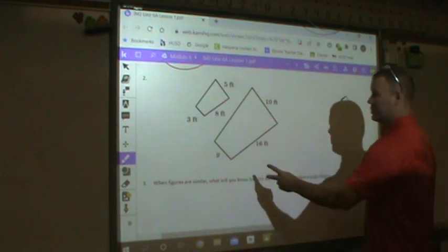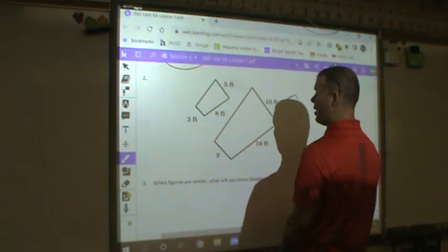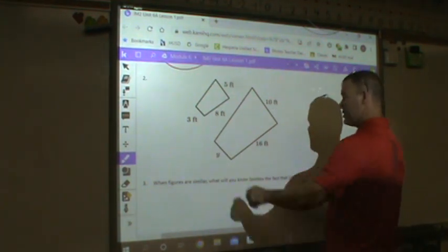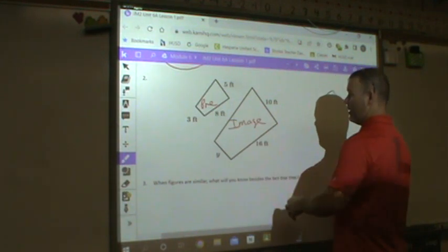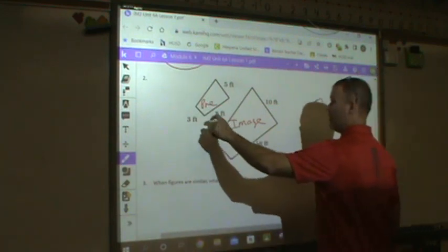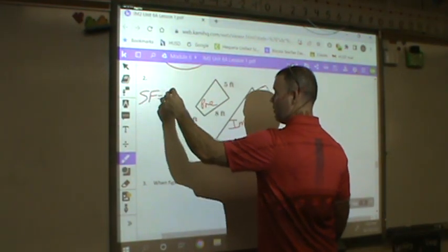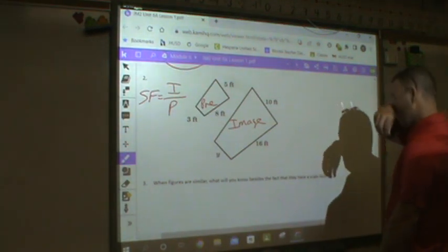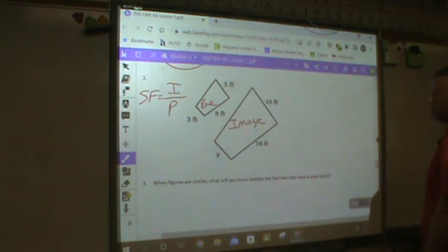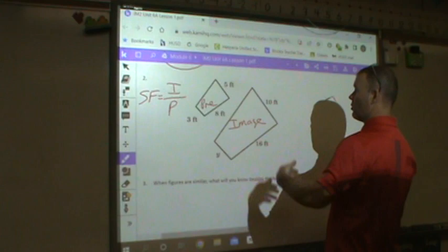Go down to the next one. Again, problem number 2. Did my figure get larger or smaller? What's the pre-image? What's the image? The pre is before. The image is after. My figure got bigger. So my scale factor there again is going to be I over P, if that helps you. What's I over P? Well, the image. Compare corresponding sides.